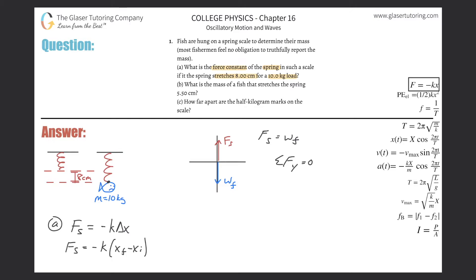Now I just need to plug in the values. The initial position is zero, and the final position — since the spring stretched downward — is negative eight centimeters. The force of the spring equals the weight of the fish, because the sum of those forces equals zero. So I can substitute: the weight of the fish equals negative k times (x-final minus x-initial).